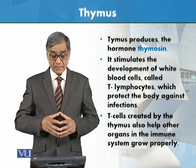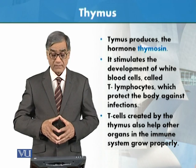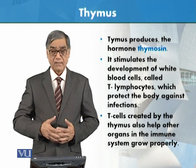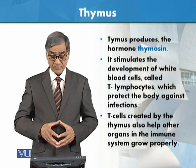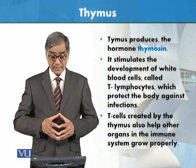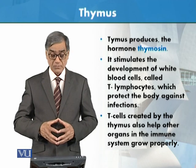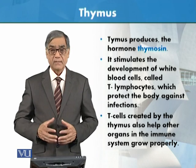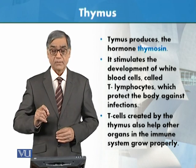Particularly the T lymphocytes, which protect the body against infections. If this hormone is not produced, then T lymphocytes will not develop. T lymphocytes are created by the thymus and also help other organs in the immune system to grow properly.